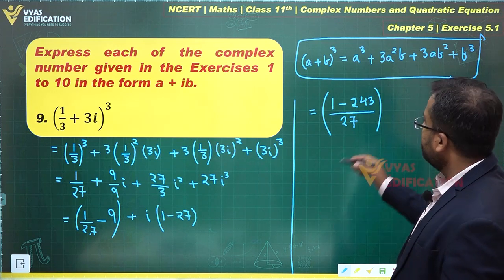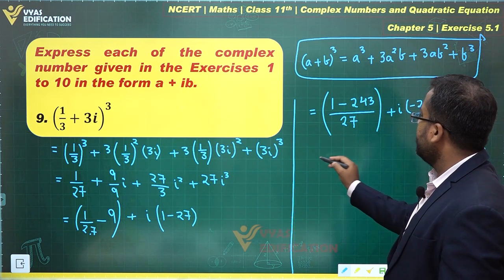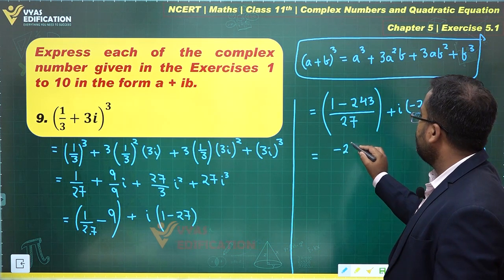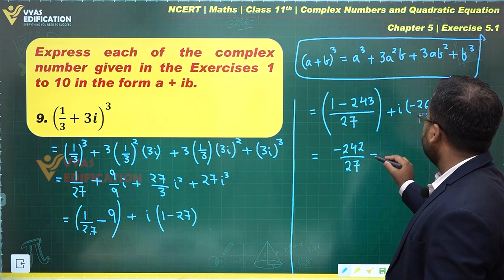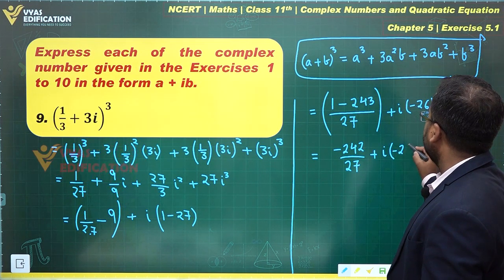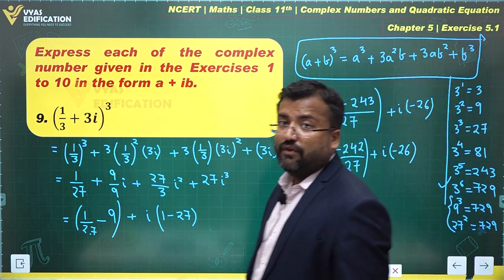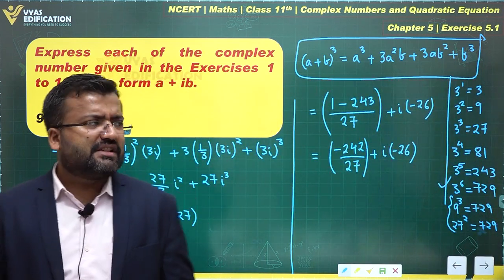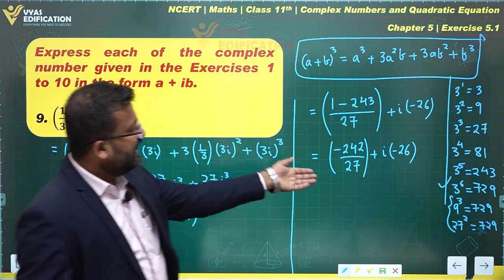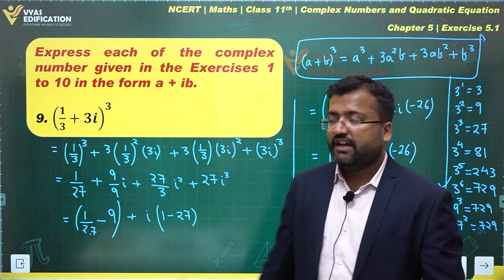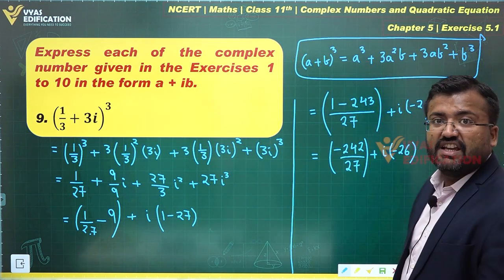So what do you get? This is -242/27 plus i(-26). Leave it in this form. This is a + ib form of this complex number. We have simplified this whole thing in this manner and obtained this result. That is the final answer for this question.